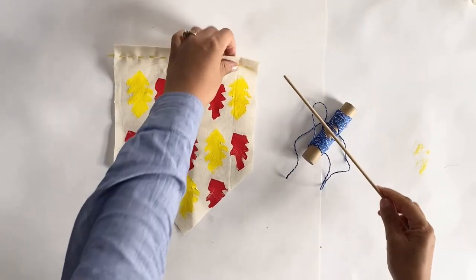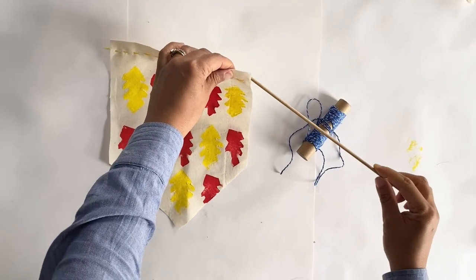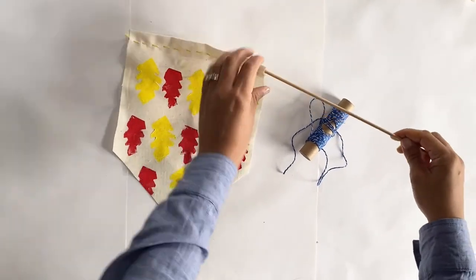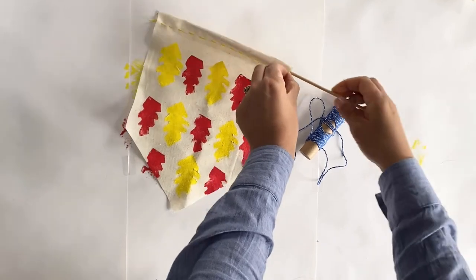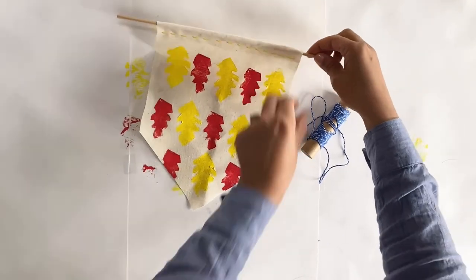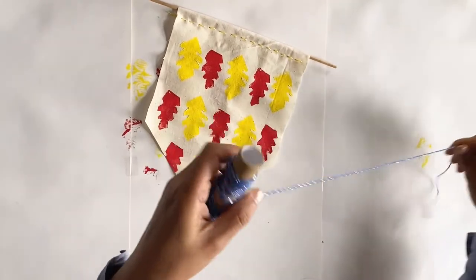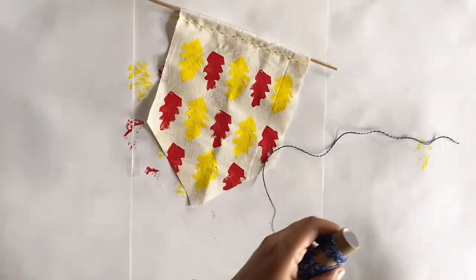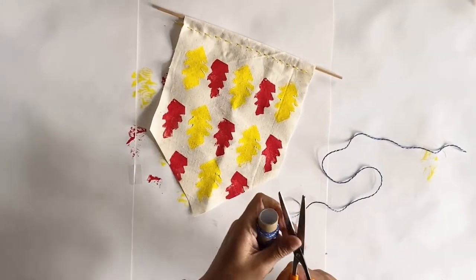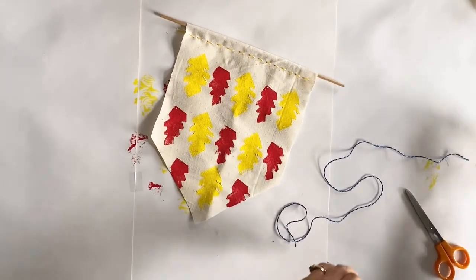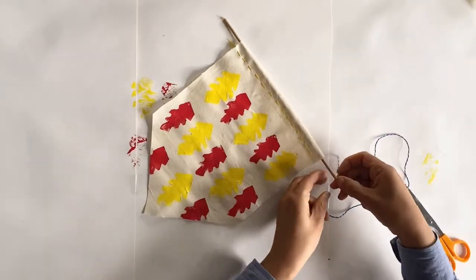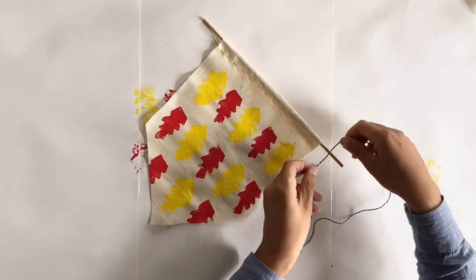And now we're ready to place the dowel stick. If you don't have a dowel stick you could also use a twig that you can collect from the park or your garden. I quite like using twigs because they really add a natural element to the flag. Using a piece of string I'm just going to tie it onto either end just by knotting it around.